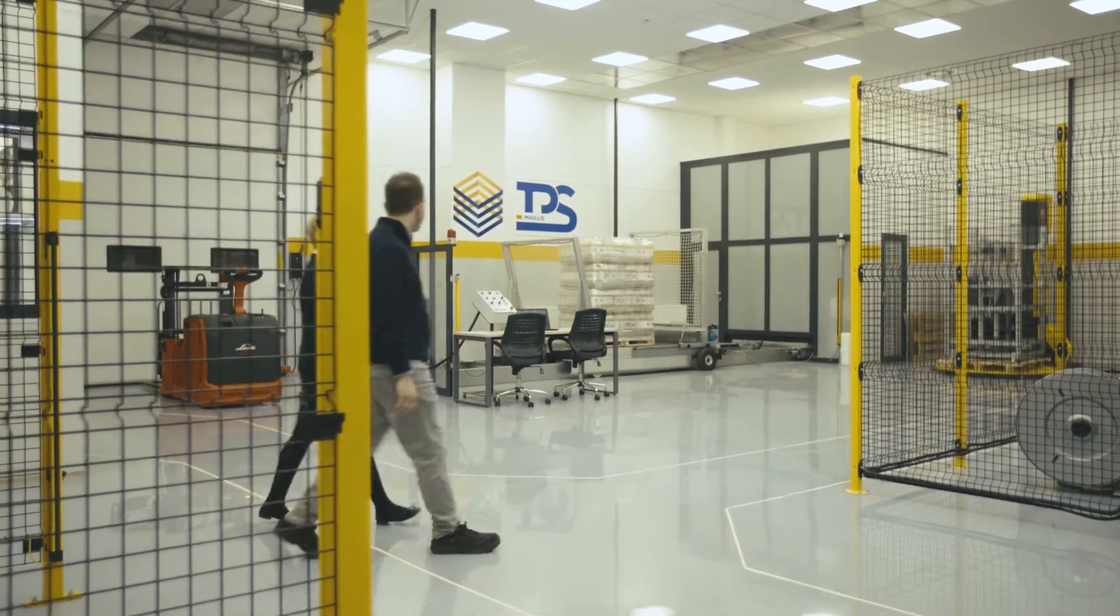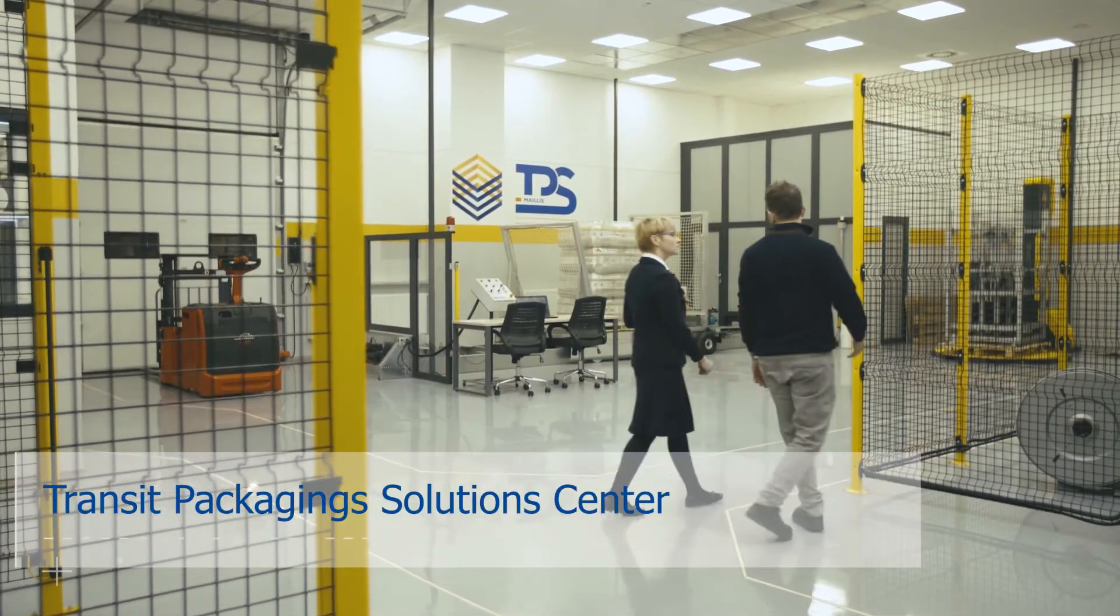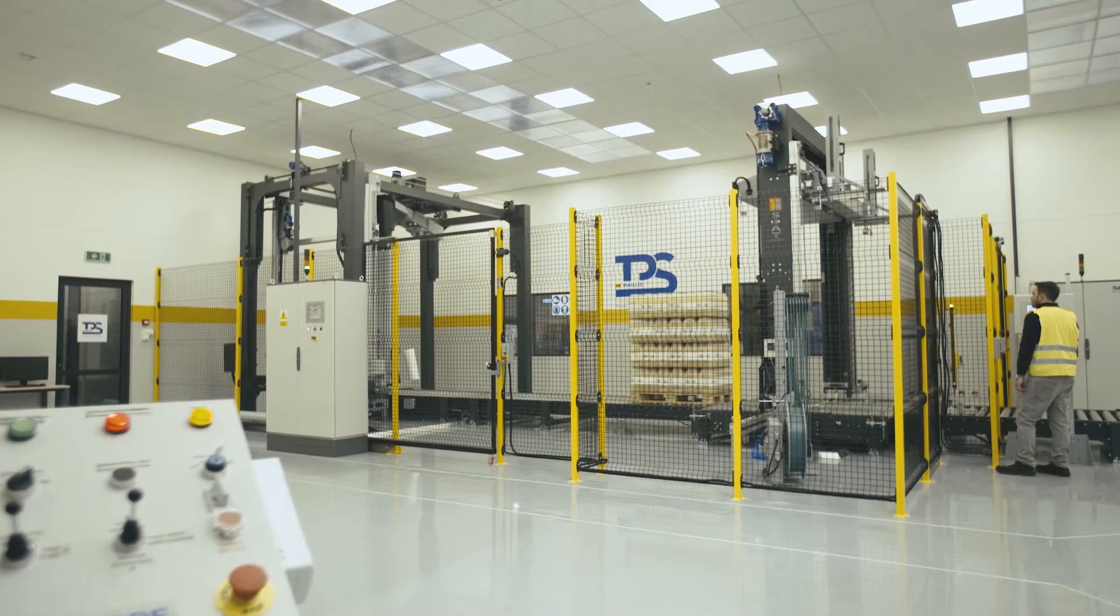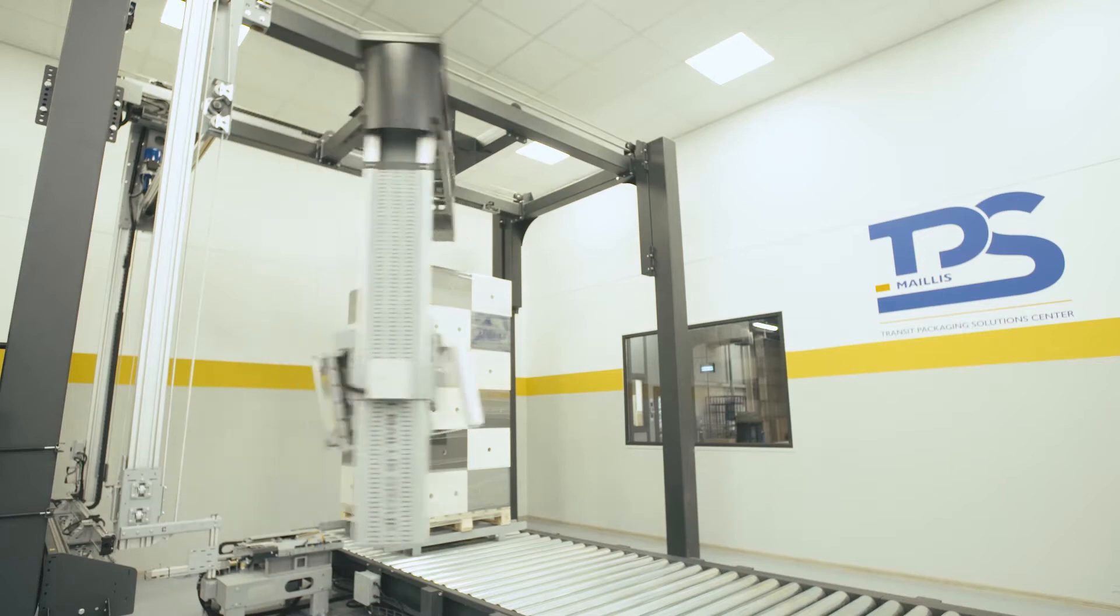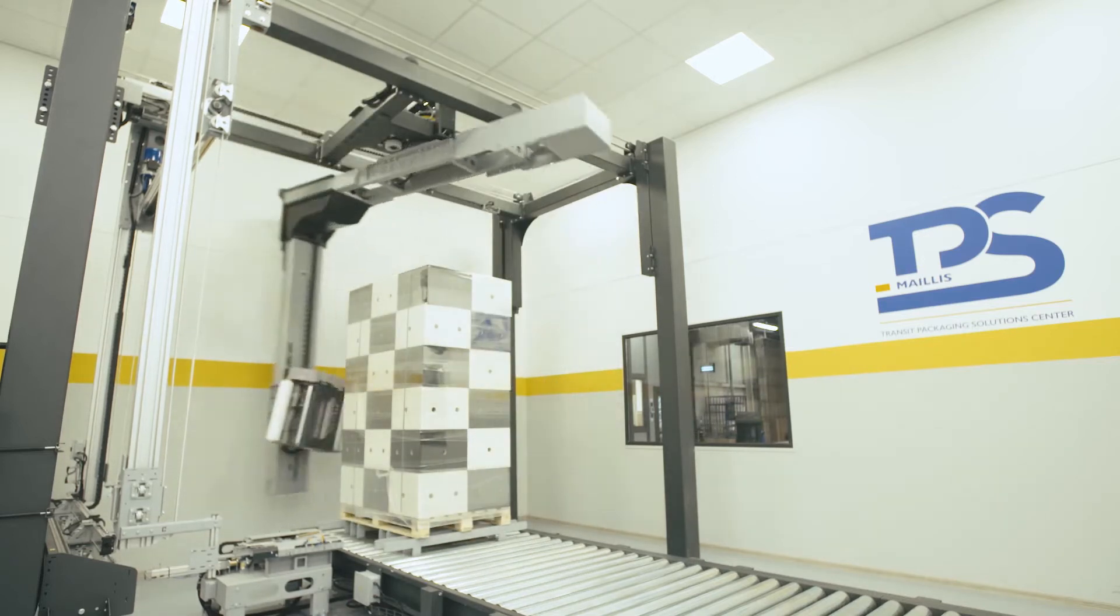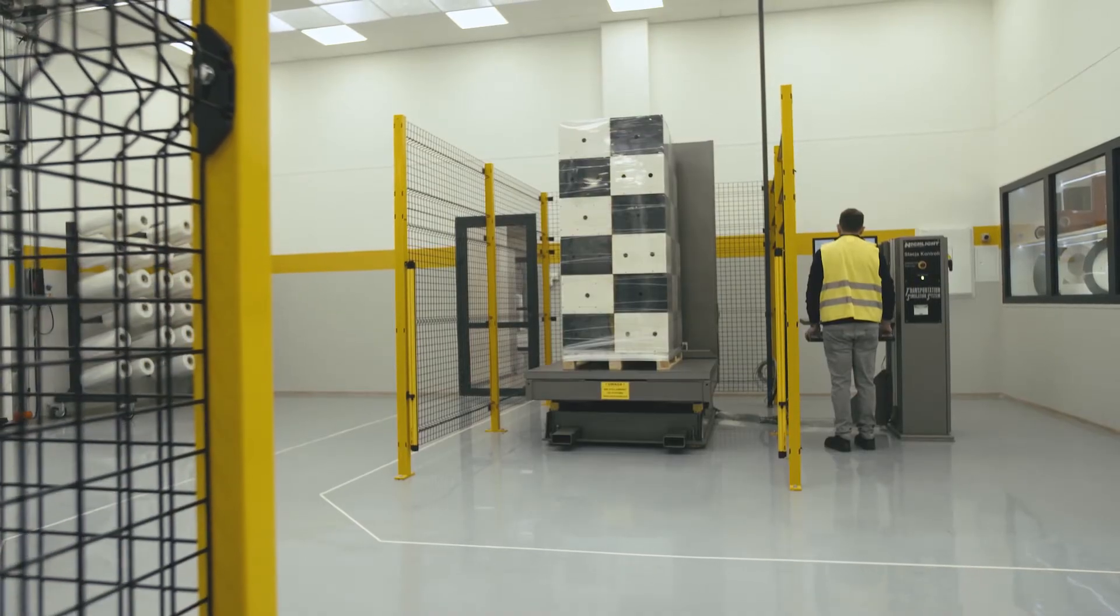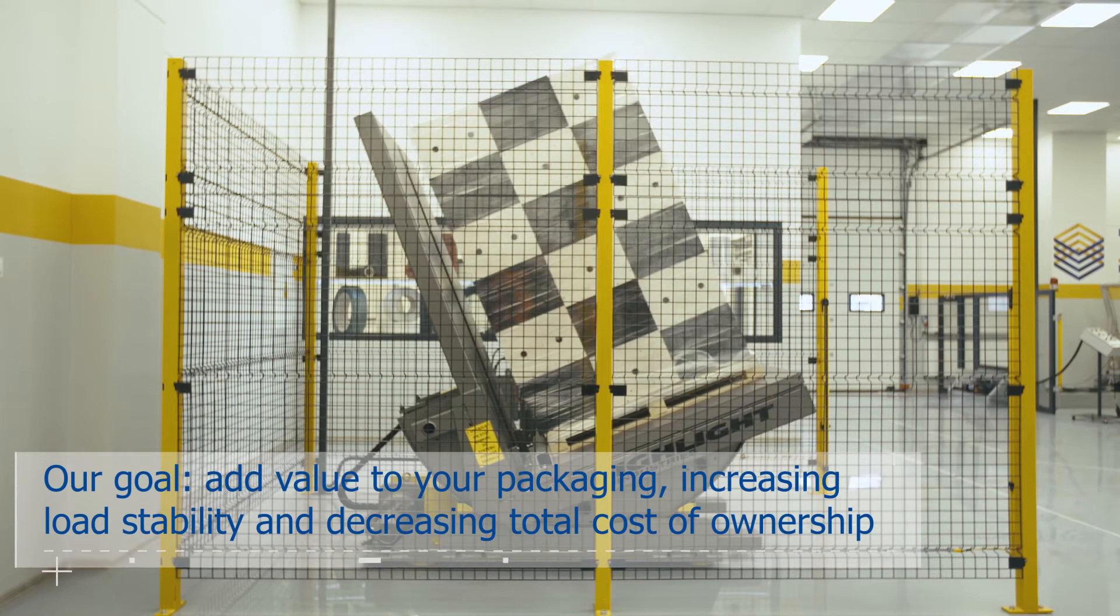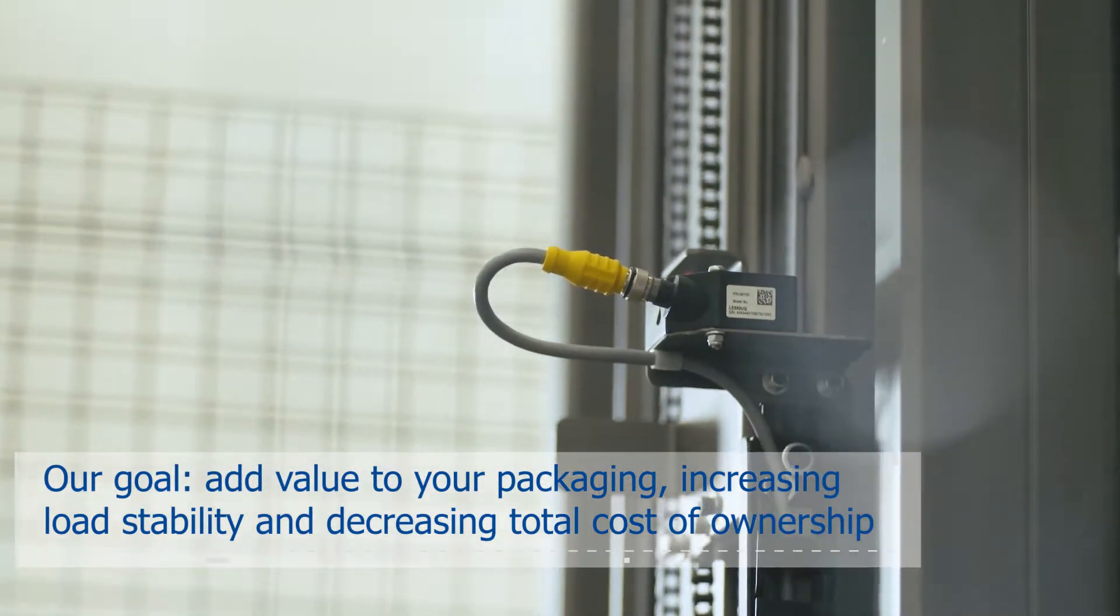A centerpiece for our strategy towards transit packaging and load stability is the new Mailis Transit Packaging Solution, TPS Center. This facility, located in Poland together with the production of stretch film and plastic straps, allows us to reach the goal of adding further value to your packaging, safeguarding load stability, and decreasing the total cost of ownership.